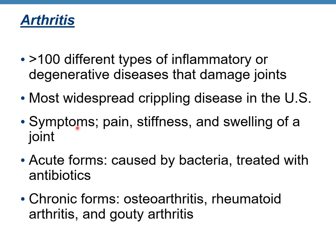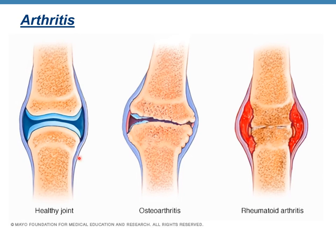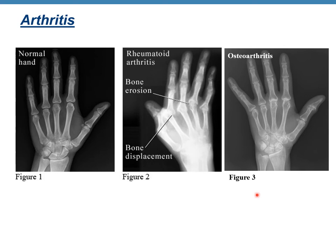Arthritis refers to more than 100 different types of inflammatory or degenerative diseases that damage joints. It's very common and a very painful, severe disease in the US. Symptoms include pain, stiffness, and swelling of a joint. Acute forms can be caused by bacteria and treated with antibiotics. Chronic forms include osteoarthritis, rheumatoid arthritis, and gouty arthritis. Here you can see a healthy joint, examples of osteoarthritis and rheumatoid arthritis, as well as x-rays of a normal hand, rheumatoid arthritis, and osteoarthritis.